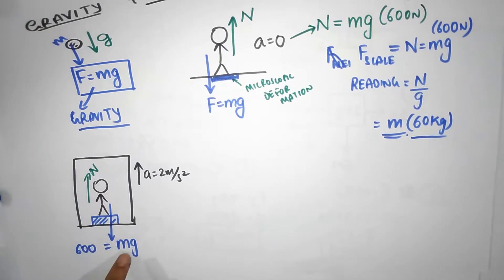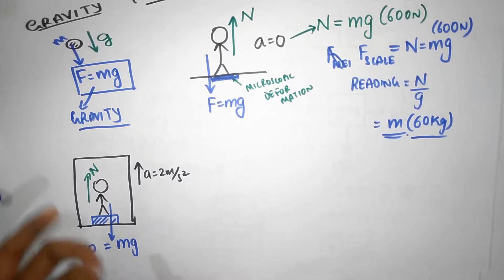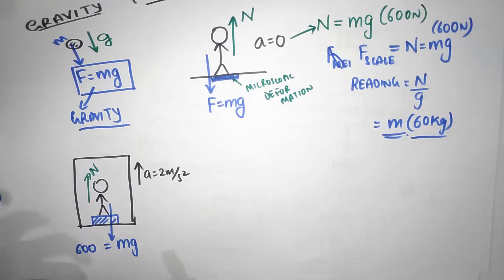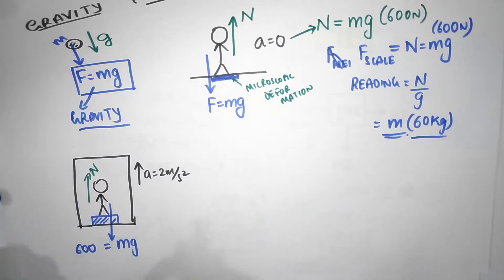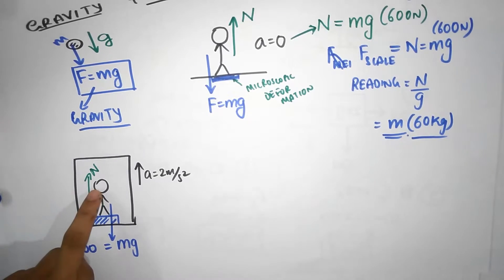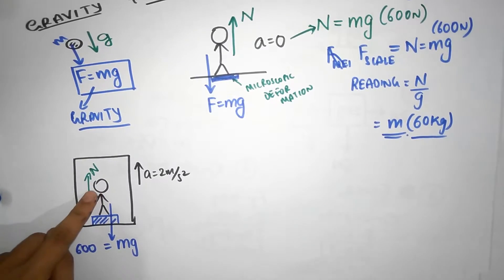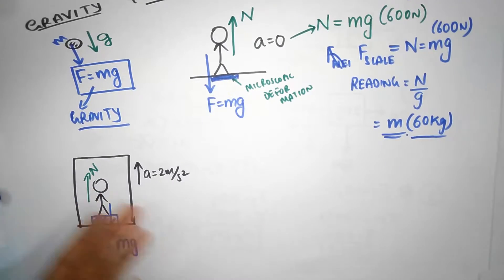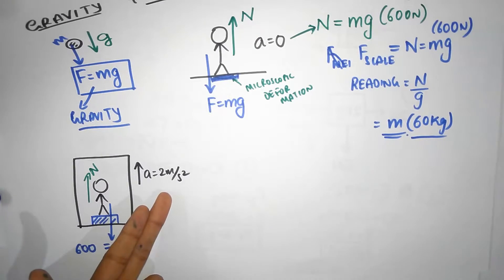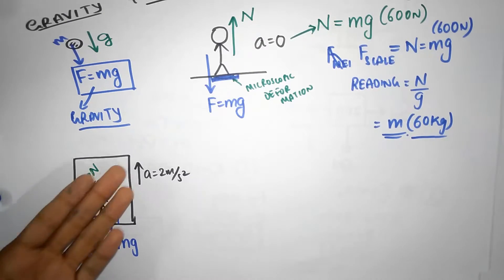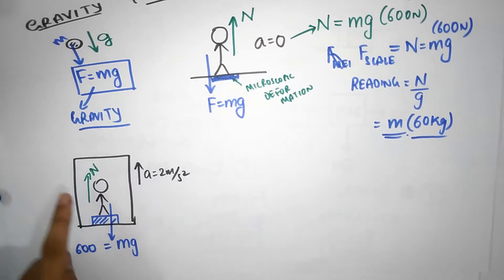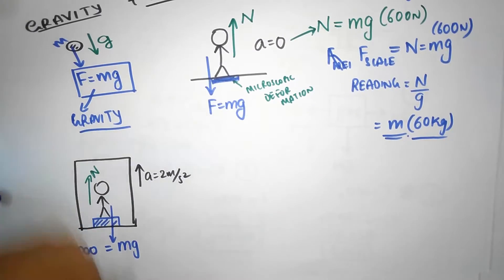Do you think this normal force is going to be the same as mg? From our inertial reference frame, you can always do the physics well using Newton's laws. Is this person accelerating? Obviously yes — the whole elevator is accelerating up, therefore this person is accelerating up. Hence, the net force on this fellow can't be zero. The normal force is upwards and acceleration is upwards, so the normal force must be bigger than mg.